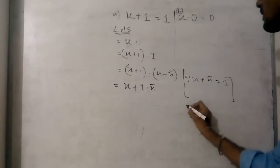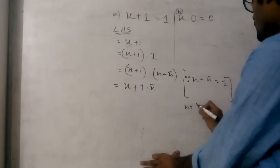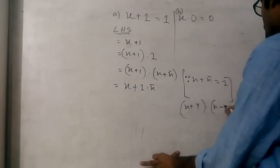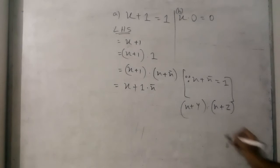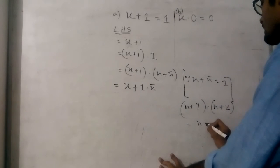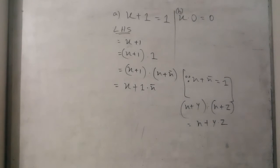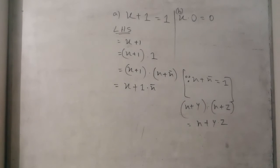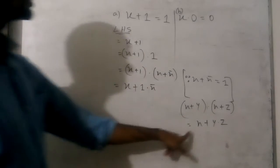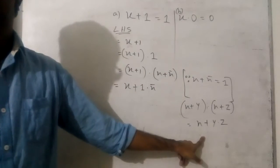Because we know the formula: x plus y into x plus z equals x plus y into z. We have this formula as a postulate. This postulate is named the distributive law — that is in our 4b section.